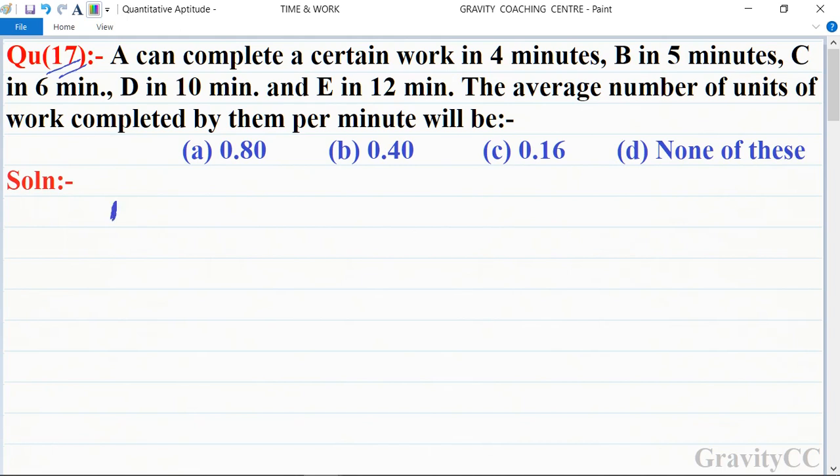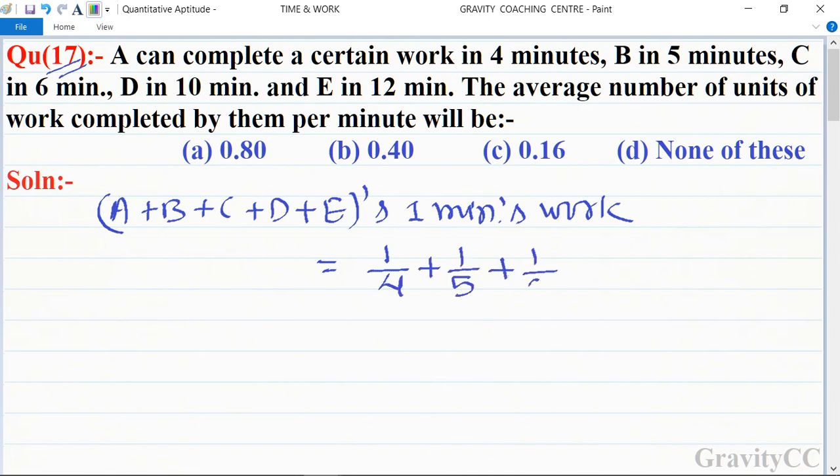A plus B plus C plus D plus E's 1 minute work is equal to 1 upon 4 plus 1 upon 5 plus 1 upon 6 plus 1 upon 10 plus 1 upon 12